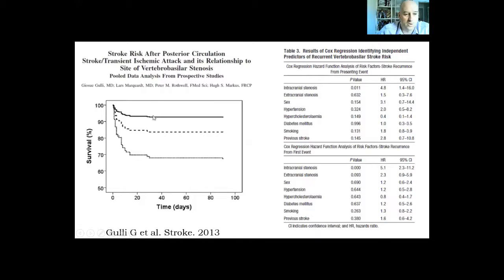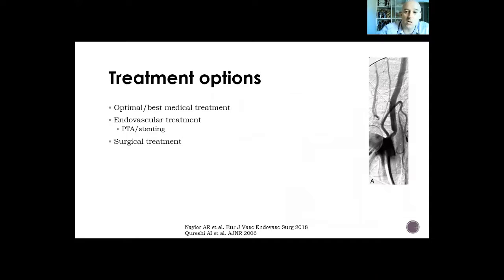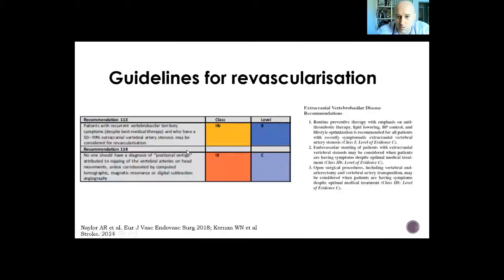These are patients with no vertebral artery stenosis, with extracranial stenosis, and survival rate is lowest in patients with intracranial vertebral artery stenosis. Treatment options include optimal best medical treatment, endovascular treatment — which includes angioplasty with or without stenting — and surgical treatment.